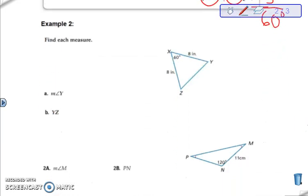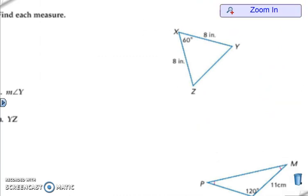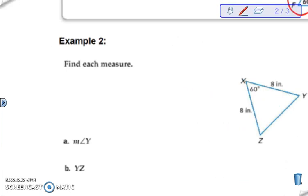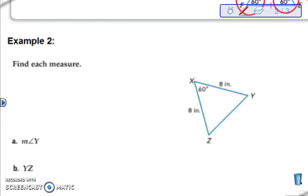How can we use this? Let's look at example 2. Okay, it says find each measure. I need to know angle Y and I need to know side YZ. Well if I have two equal sides I have to have two equal angles.